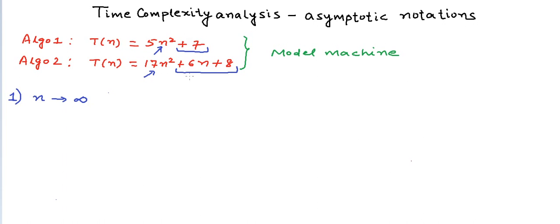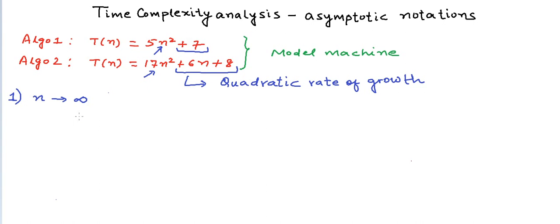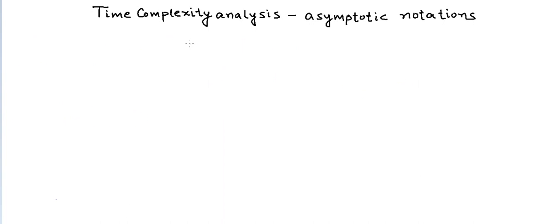And if n tends to infinity, the constant multipliers 5 and 17 also become insignificant, and these two functions will pretty much have a similar rate of growth for very high values of n. So irrespective of the machine used, we can say both algorithms have a quadratic rate of growth. This brings us to a formal way of classifying functions into classes using asymptotic notations, where we only retain the variable term. The first asymptotic notation we want to define is the Big O notation.